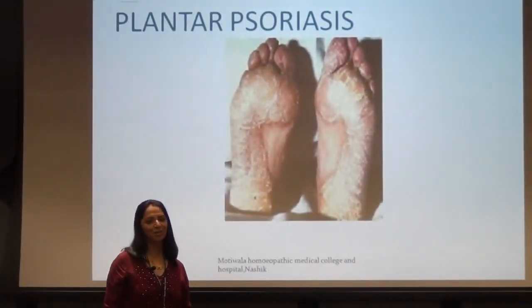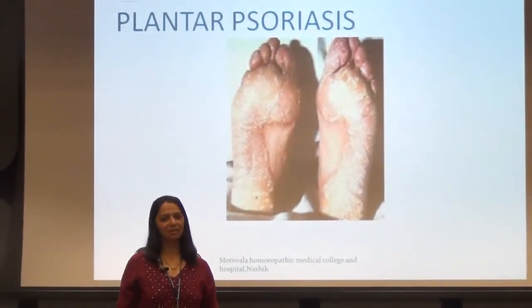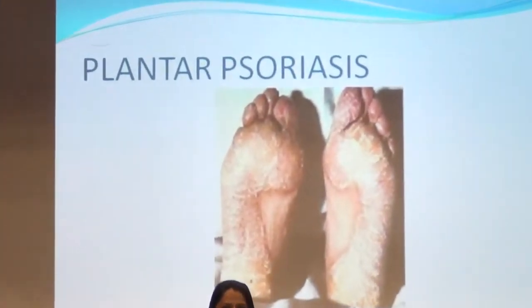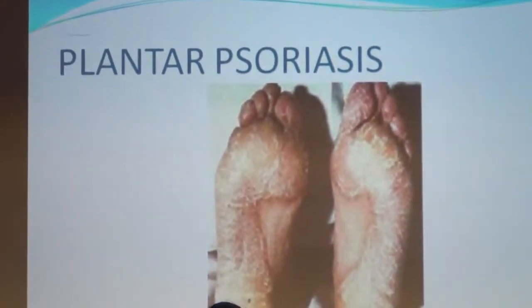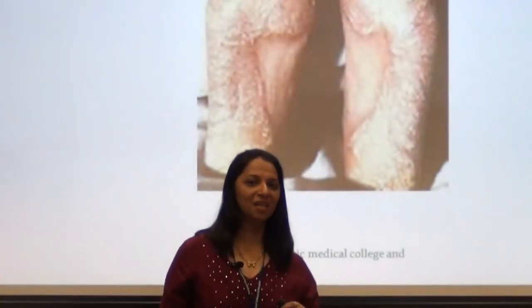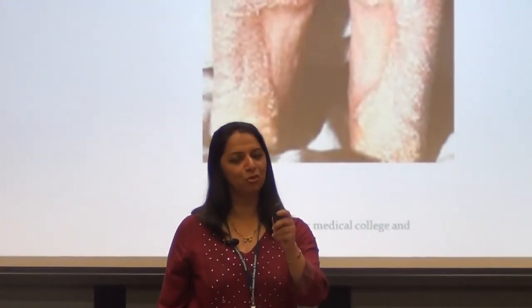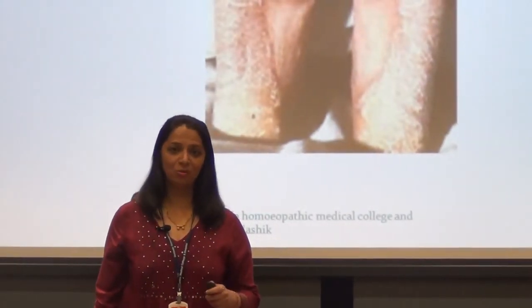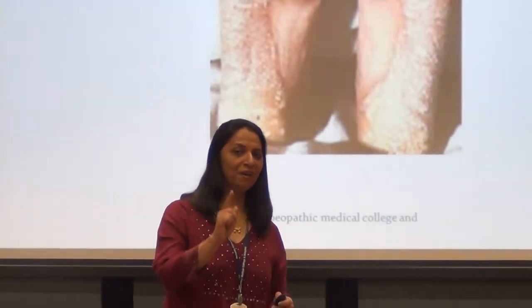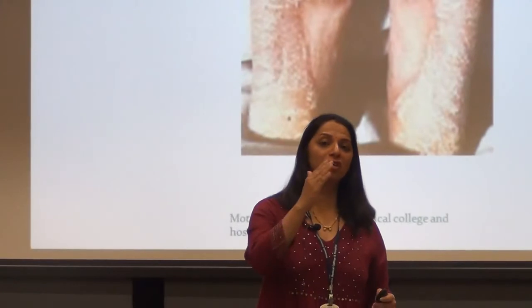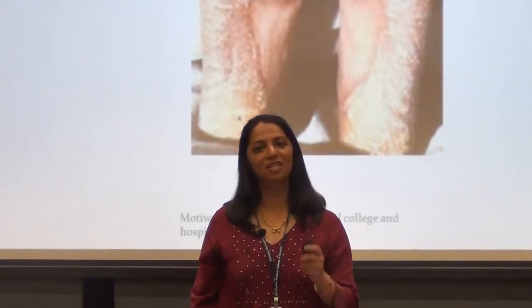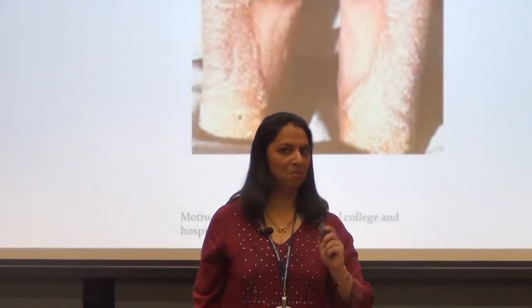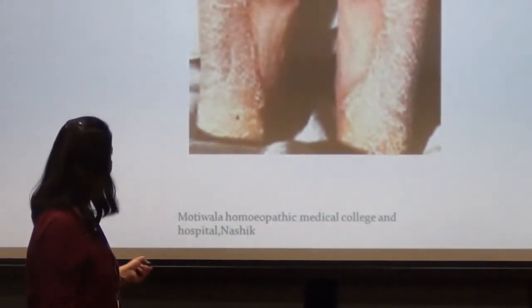This is plantar psoriasis — psoriasis affecting the palms and soles. Plantar psoriasis is easier to treat compared to other forms as it usually localizes itself. You will see hyperkeratosis — thickening of skin — with comparatively less exfoliation, but there will be deep fissures on the affected part that may bleed. Itching is minimal.